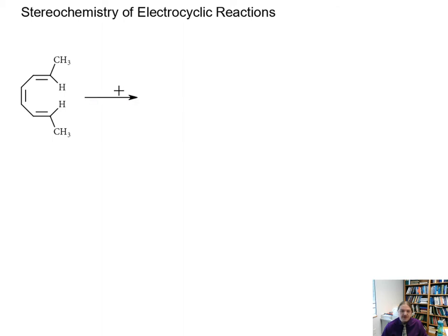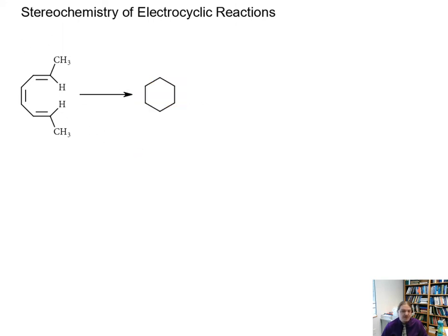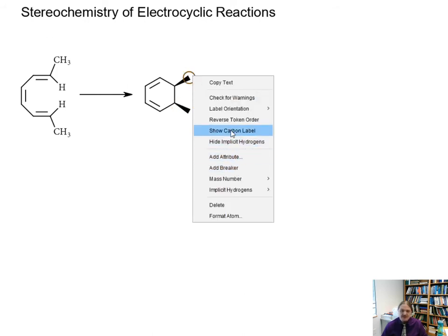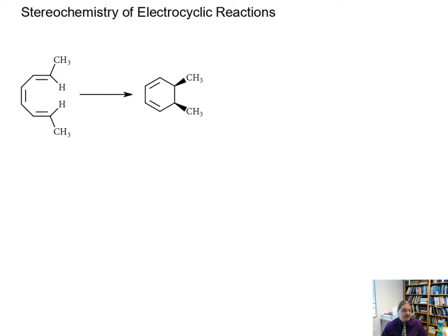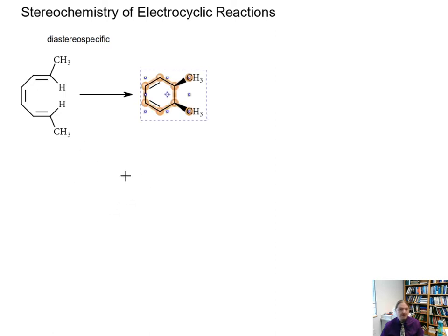In a previous video I introduced the idea of an electrocyclic reaction — a reaction of a conjugated polyene undergoing some kind of ring closure, though the ring opening versions are also things that can happen. I described that this reaction is stereospecific or diastereospecific, so knowing the stereochemistry of the reactant tells me the stereochemical outcome in the product.